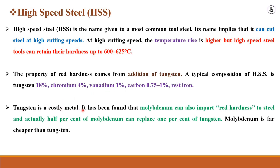Tungsten is a costly metal. However, molybdenum can also impart red hardness to steel — half a percentage of molybdenum can replace 1% of tungsten. Molybdenum is far cheaper than tungsten, and both provide similar properties, but tungsten increases the cost of the tooling materials.